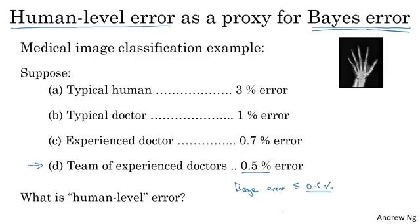We don't know how much better it is. Maybe there's an even larger team of even more experienced doctors that could do even better. So maybe it's even a little bit better than 0.5%, but we know the optimal error cannot be higher than 0.5%. So what I would do in this setting is use 0.5% as our estimate for Bayes error. So I would define human-level performance as 0.5%, at least if you're hoping to use human-level error in the analysis of bias and variance as we saw in the last video.